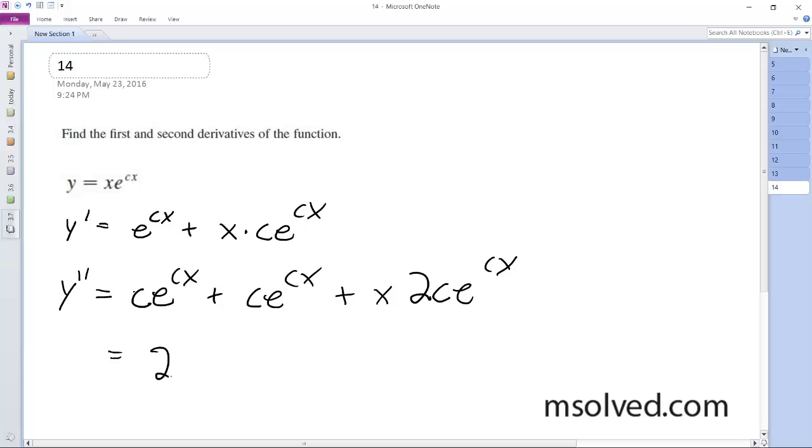So what we get is 2c times e^(cx) plus 2xc times e^(cx), and we can factor out 2c or e^(cx).